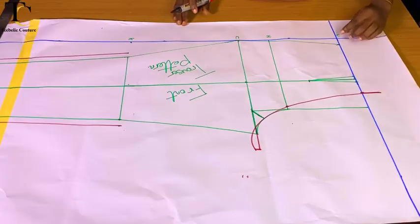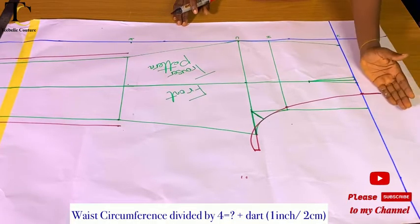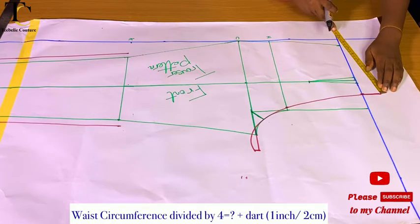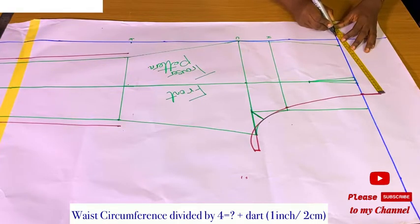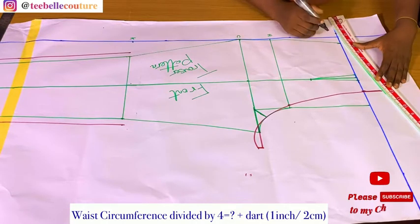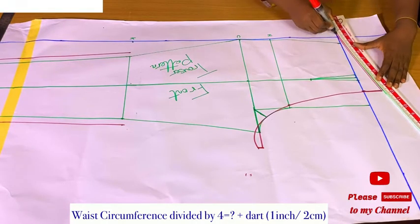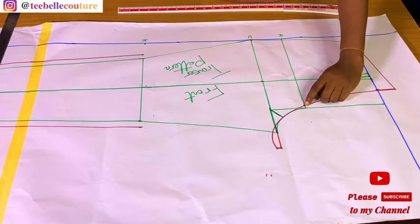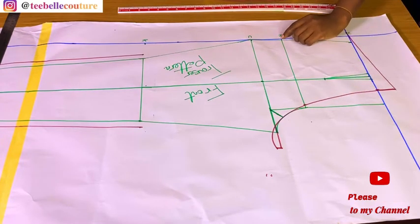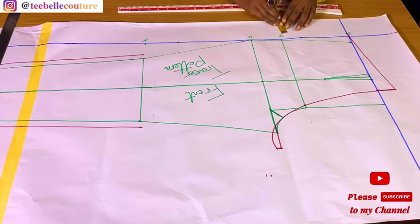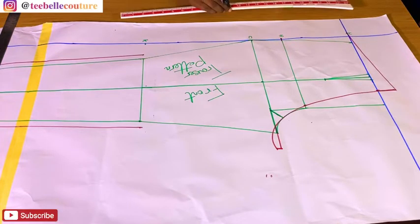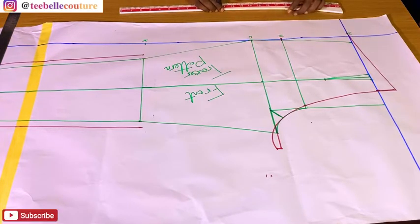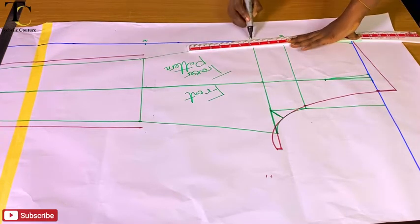The next thing for me to do is to mark my waist divided by four plus my dart for the back trouser. Once I've gotten my answer, I will let it be slanted because it must be equal to the other side of my trouser at the front. Then I'll use my trouser curve to connect the lines together. Whatever I go in at that spot — one centimeter, or 0.5 inches in inches — I will mark it back at the other side of my hip line.